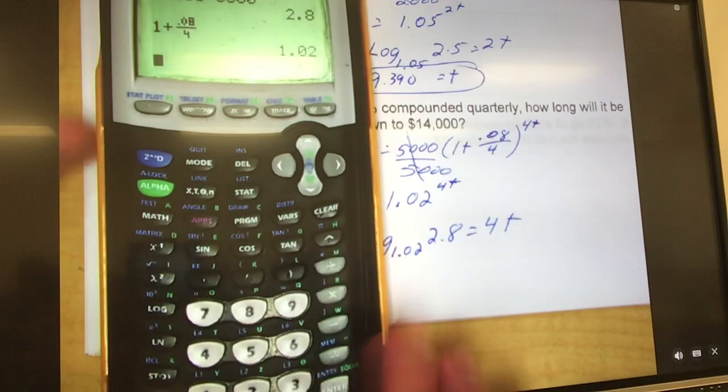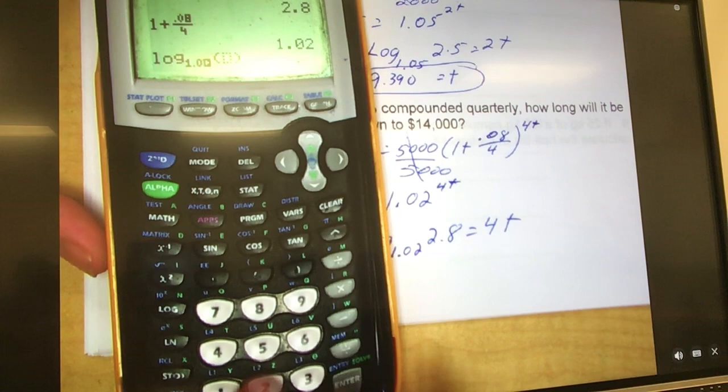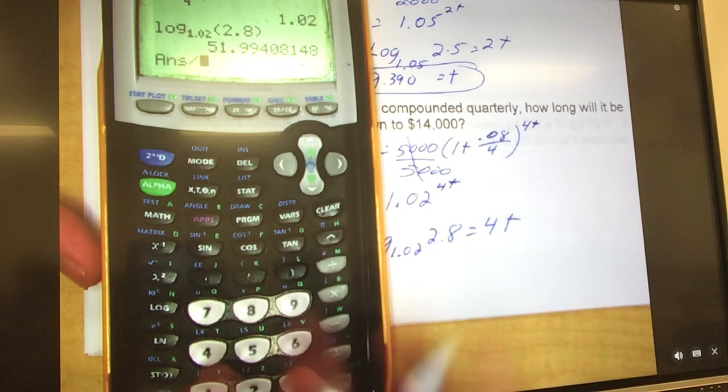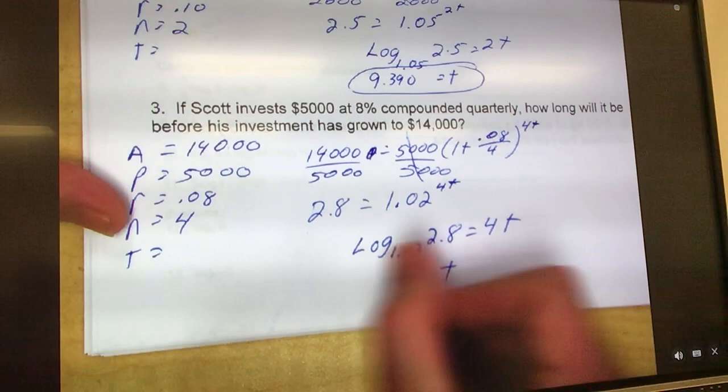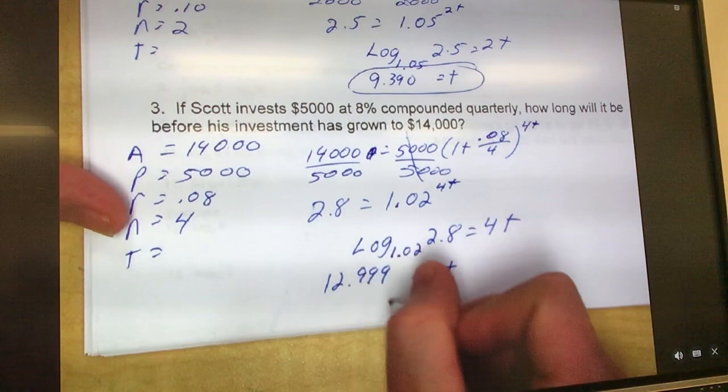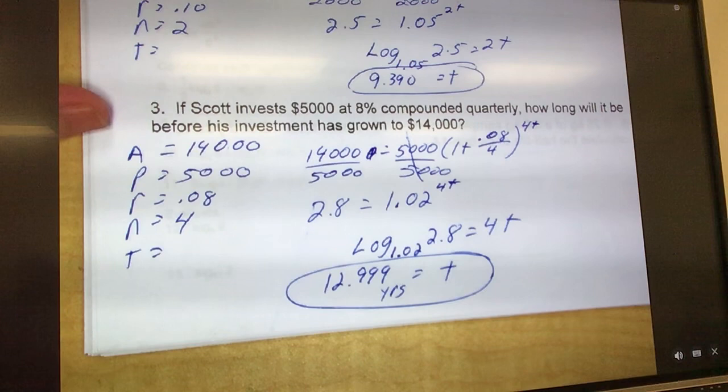So I'm going to get this, then I'm going to divide it by 4, right, to solve for T. So math, log base 1.02, 2.8, enter, divided by 4, gives me 12.999. Because that's a 5, so it's like 13 years. 12.999, there, you can call it approximately 13 years, that's up to you. I'll take either one. Okay, flip it.